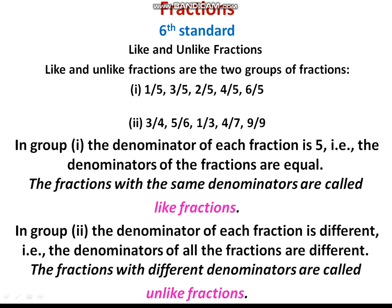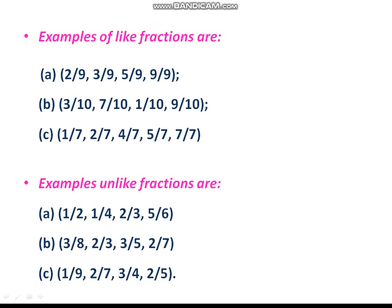If the denominators are different, then those fractions are considered as unlike fractions. The fractions with different denominators are called unlike fractions. Here we are taking examples of like fractions: 2 by 9, 3 by 9, 5 by 9, 9 by 9. This is an example of like fractions, where the denominator is the same, equal to 9.